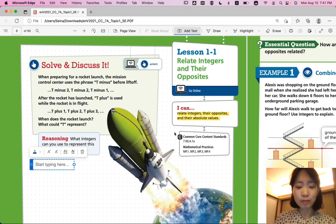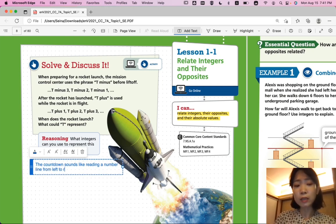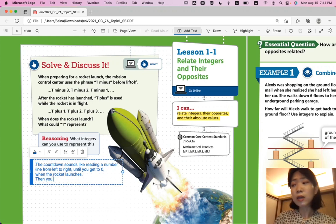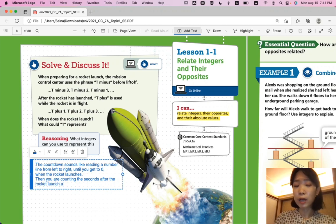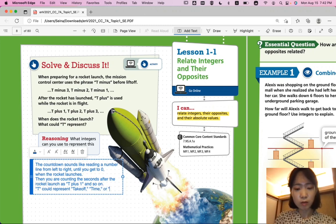But it most makes sense for the takeoff. The countdown sounds like reading a number line from left to right until you get to zero when the rocket launches. Then, you are counting the seconds after the rocket launch as T-plus-1 and so on. So T could represent takeoff time or today.